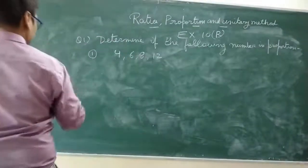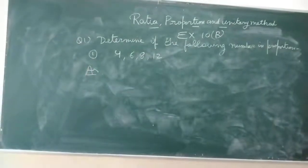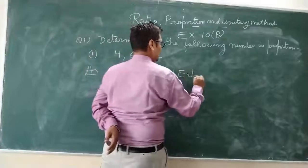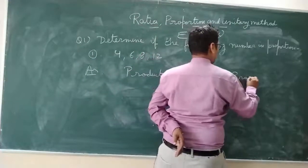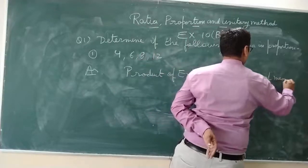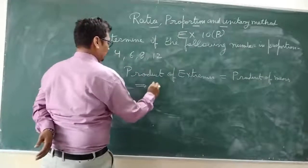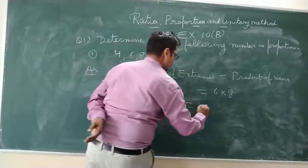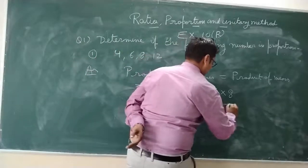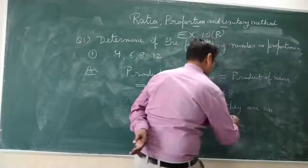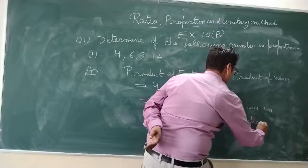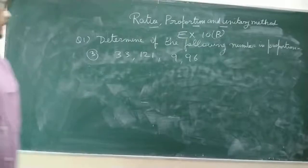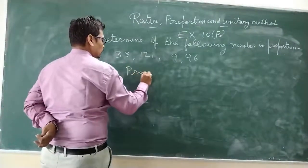Determine if the following numbers are in proportion or not. For proportion, the product of extremes should equal the product of means. The extreme terms are 4 and 12. So 4 into 12 should equal 6 into 8. This is 48 and this is also 48. Hence they are in proportion.